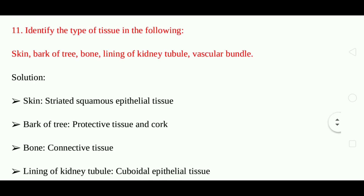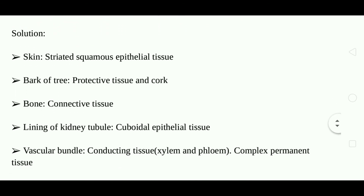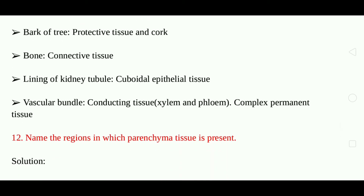Question 11: Identify the type of tissue in the following — skin, bark of tree, bone, lining of kidney tubule, vascular bundle. Answer: Skin — stratified squamous epithelial tissue. Bark of the tree — protective tissue and cork. Bone — connective tissue. Lining of kidney tubule — cuboidal epithelial tissue. Vascular bundle — connective tissue, conducting tissue, xylem and phloem, complex permanent tissue.